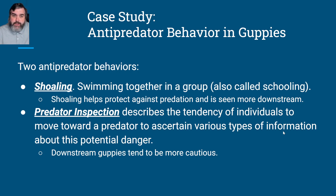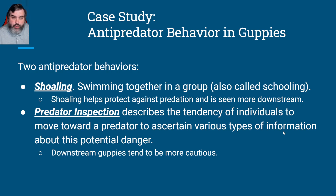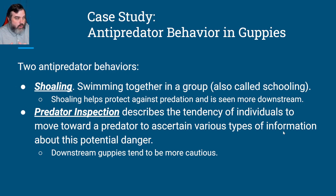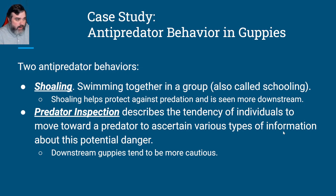There are two anti-predator behaviors that these fish will exhibit. One is shoaling — also called schooling — where fish swim together in a group. There's safety in numbers: it's harder for the predator to focus in on one individual, and if one gets eaten, the rest can survive and get away. This is seen more downstream at the high predation site.